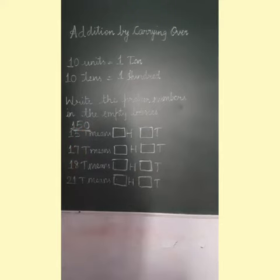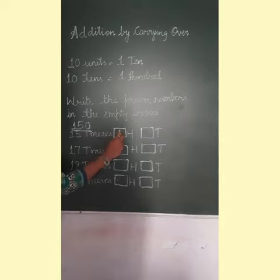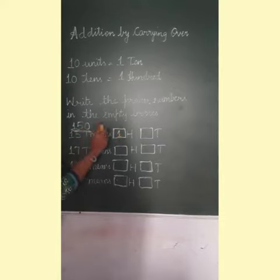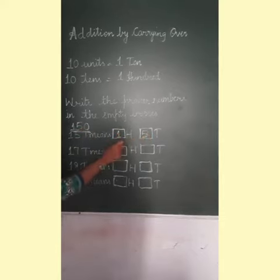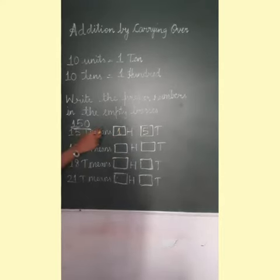What does this tell us? 150 means 15 tenths. Here, 10 and 5 tenths — 5 tenths is equal to 50.